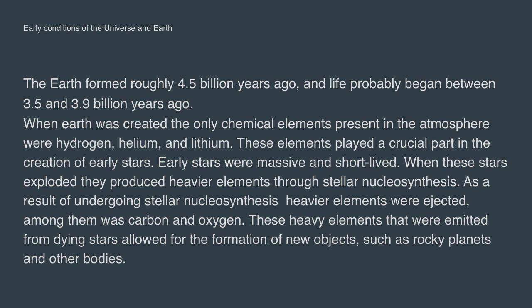Early stars were massive and short-lived. When these stars exploded, they produced heavier elements through stellar nucleosynthesis. As a result, heavier elements were ejected, among them carbon and oxygen. These heavy elements emitted from dying stars allowed for the formation of new objects such as rocky planets and other bodies.